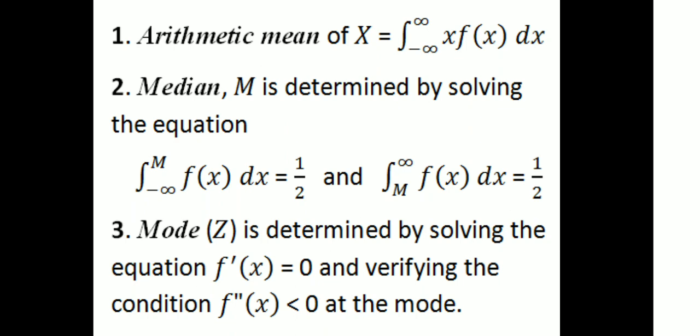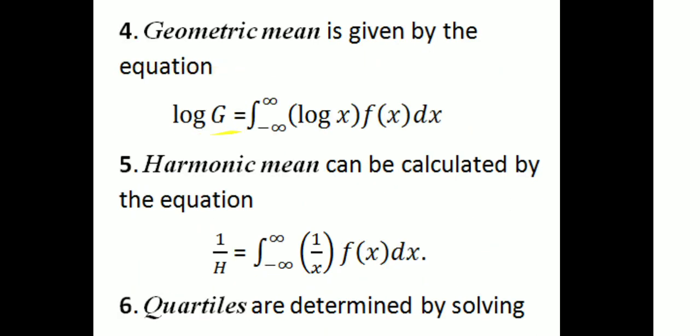First, the arithmetic mean of x for a continuous random variable is the integral from minus infinity to infinity of x·f(x) dx. The median m is determined by solving the equation: integral from minus infinity to m of f(x) dx = 1/2. The mode Z is determined by solving f'(x) = 0. The geometric mean G is given by: log G = integral from minus infinity to infinity of log(x)·f(x) dx. The harmonic mean H is given by: 1/H = integral from minus infinity to infinity of (1/x)·f(x) dx.